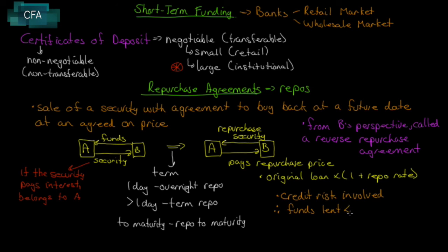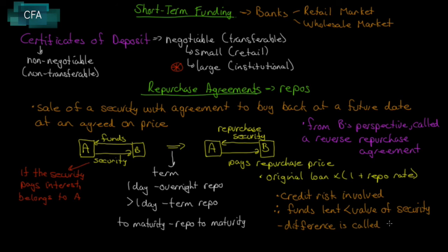There is credit risk involved because, even though the loan is secured, the value of the security could change over the term. So the funds lent are typically less than the value of the security, and the difference is called the repo margin or the haircut. If A does not repurchase the security, B can sell it, knowing that margin of error was built in to cover any price change.